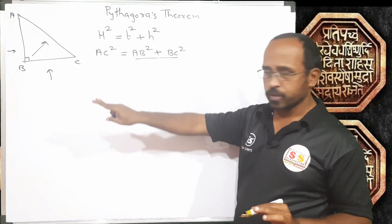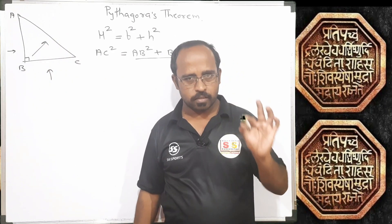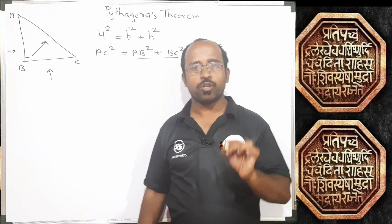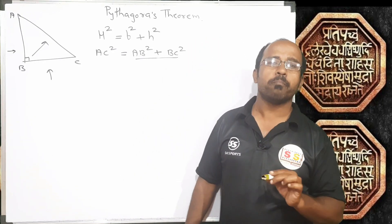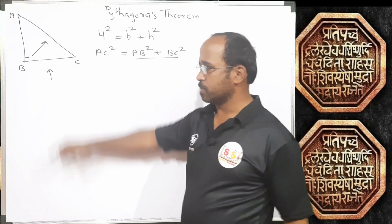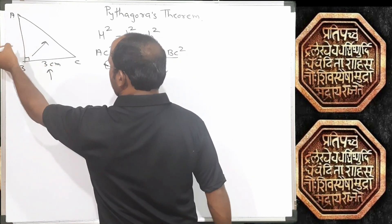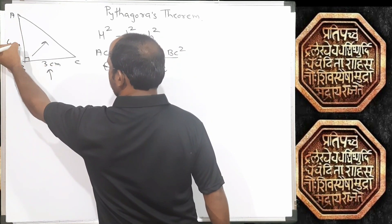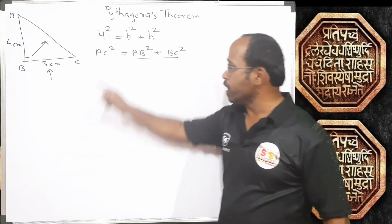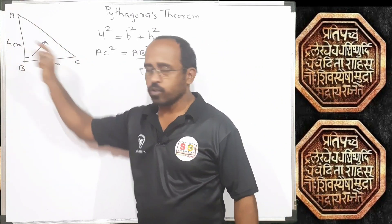Please remember two things: the side in front of the 90 degree angle is called the hypotenuse, and the square of hypotenuse is equal to the addition of squares of base and height. Let us consider BC as base with length 3 cm and length of AB as 4 cm. Then what will be the length of AC? According to the Pythagoras theorem, the square of AC will be the addition of the squares of these two sides.